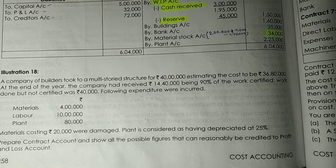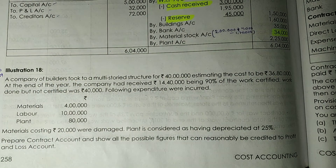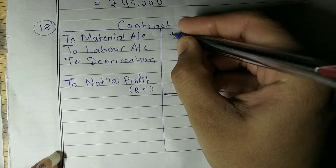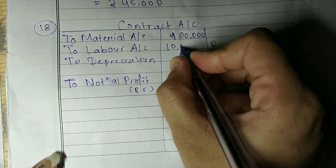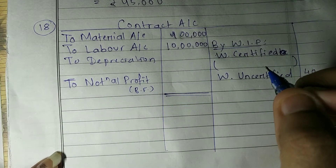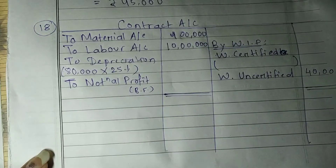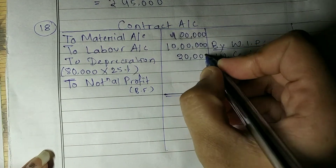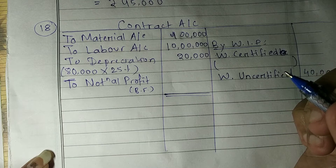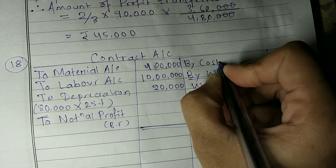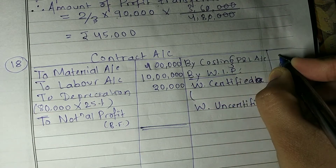Following expenditure was incurred: material, labour, and plant are given. Material costing Rs. 20,000 was damaged. Damaged or wasted material goes to the Costing P&L account. Plant is depreciated at 25%. We need to make the contract account. Material value from the question is Rs. 4 lakhs, labour is Rs. 10 lakhs, and depreciation on plant costing Rs. 80,000 at 25% = Rs. 20,000.